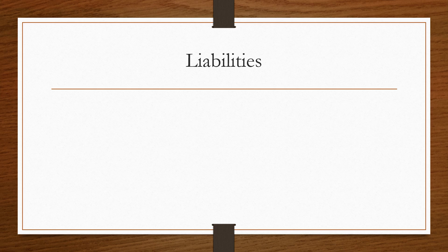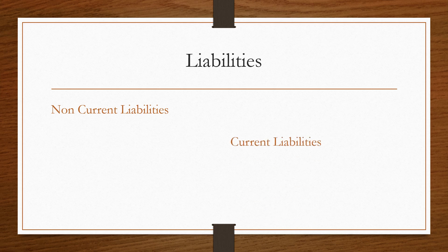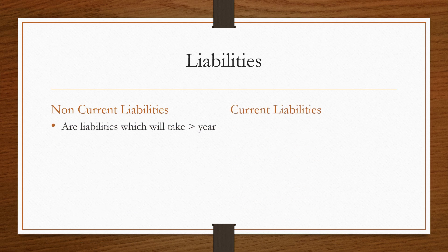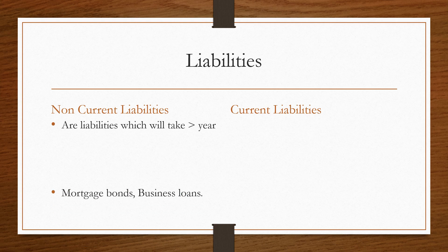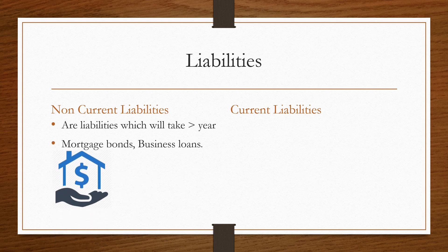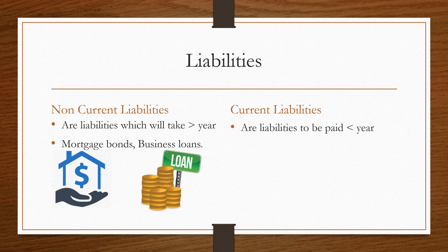There are two types of liabilities, just as there are two types of assets. Non-current liabilities are liabilities that will take more than a year to pay back — these are usually mortgages, bonds, and business loans. Current liabilities are liabilities we are going to pay within a year — these are usually accounts payable to suppliers on 30 or 60 day accounts, or taxes and other commitments paid yearly or monthly.